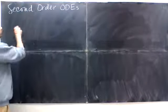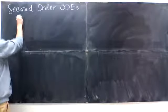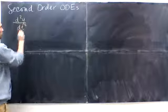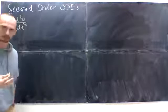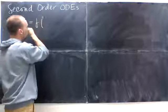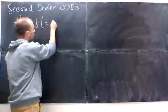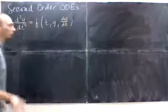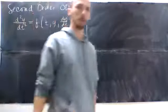A second-order ODE is of the form where we have the second derivative of y with respect to t, where y is just a function of t, is given by some function of t, y, and dy/dt. That's what we would call a second-order ordinary differential equation.